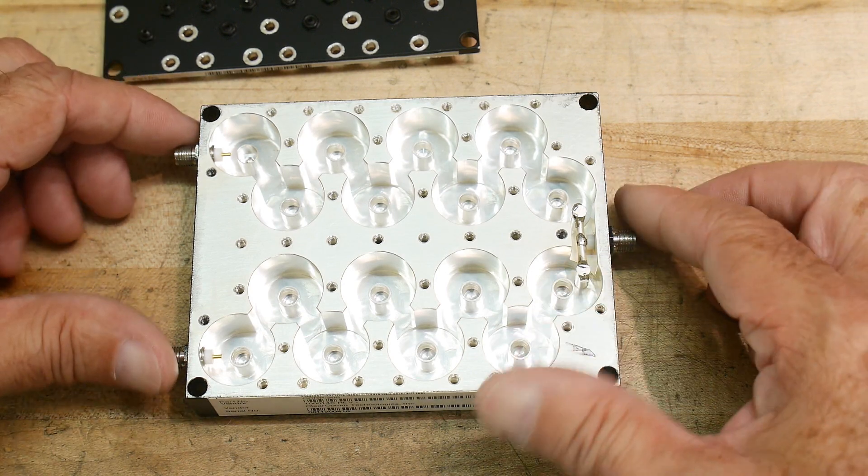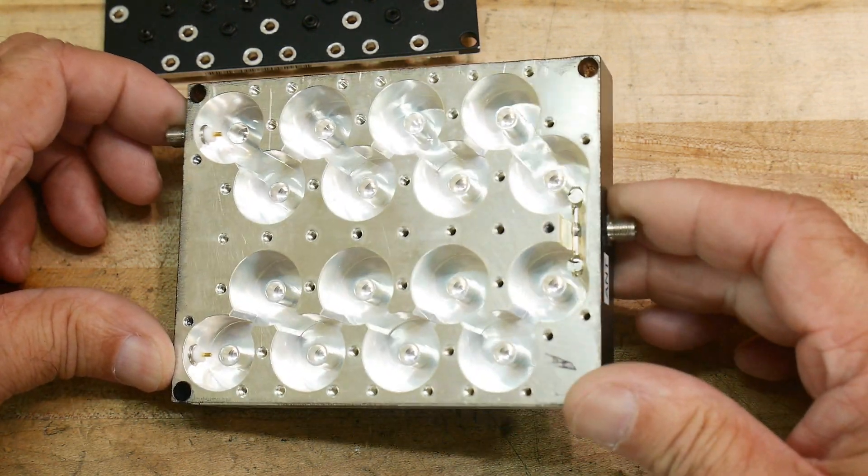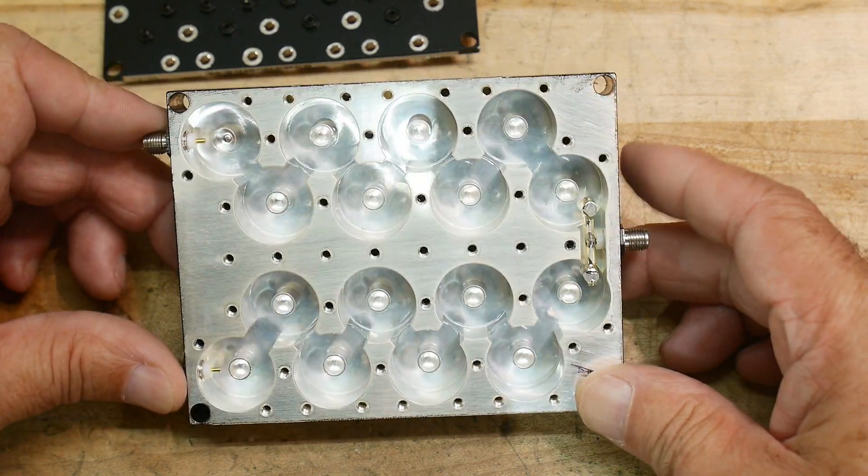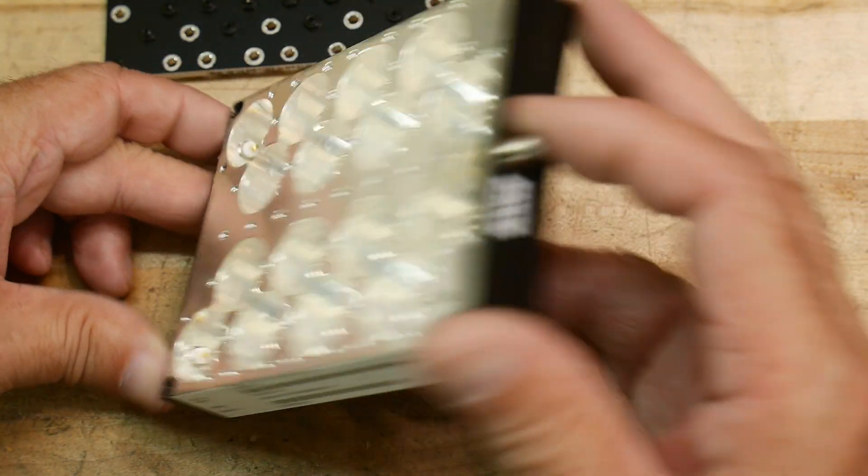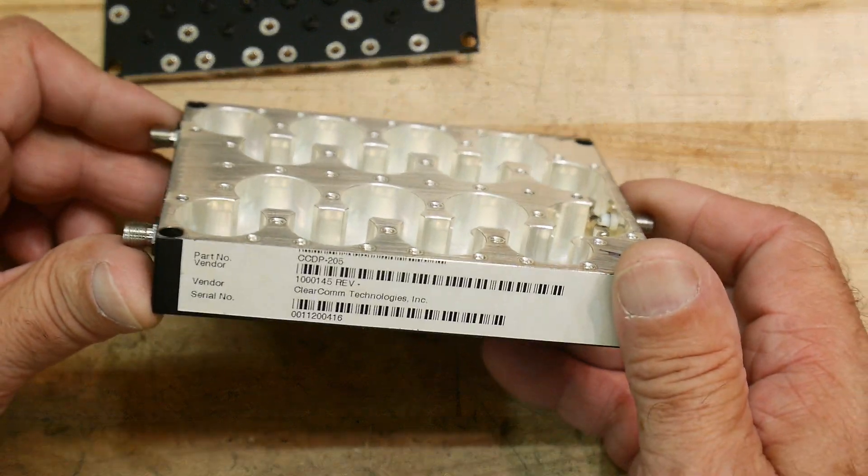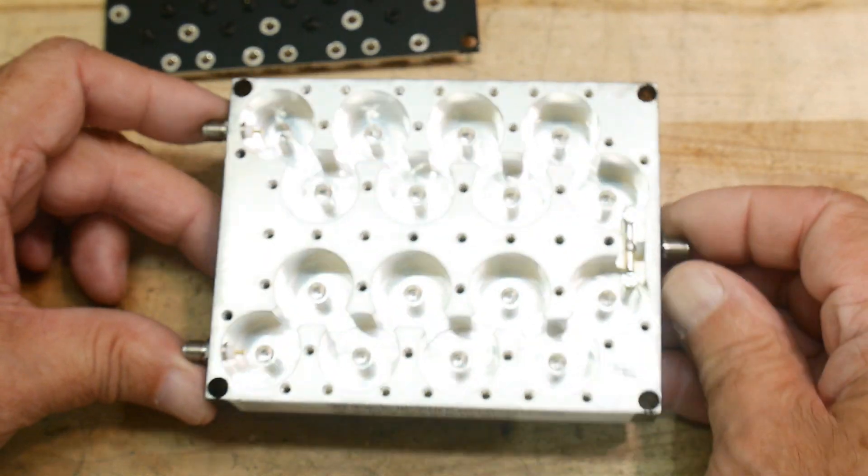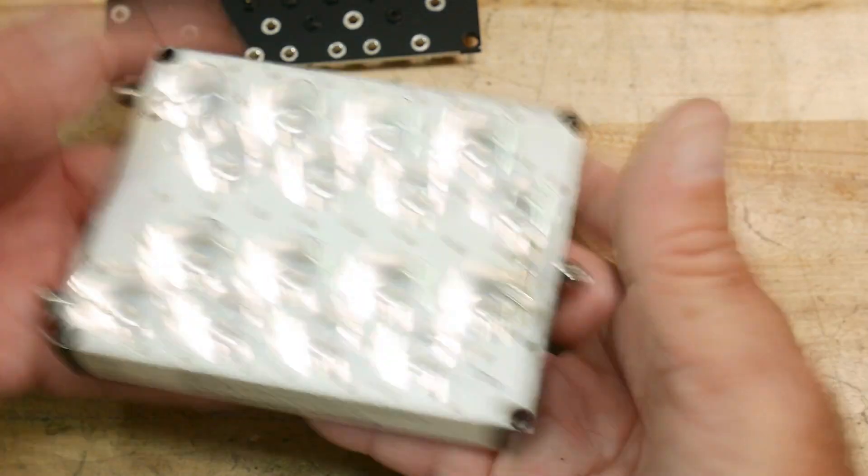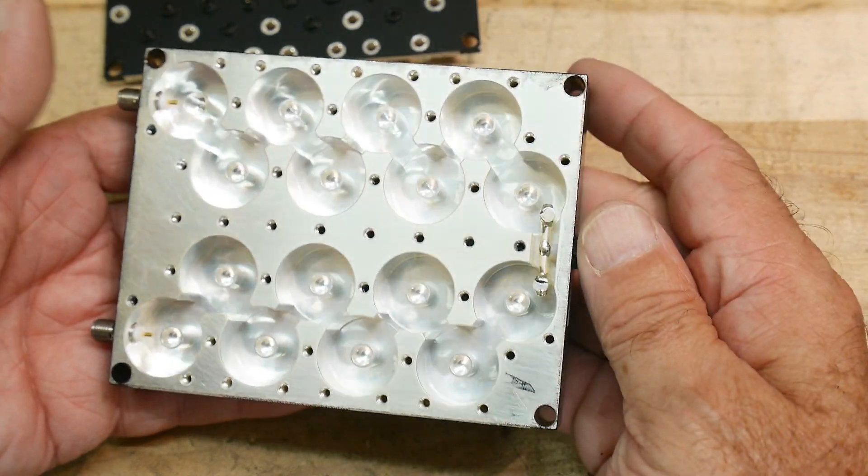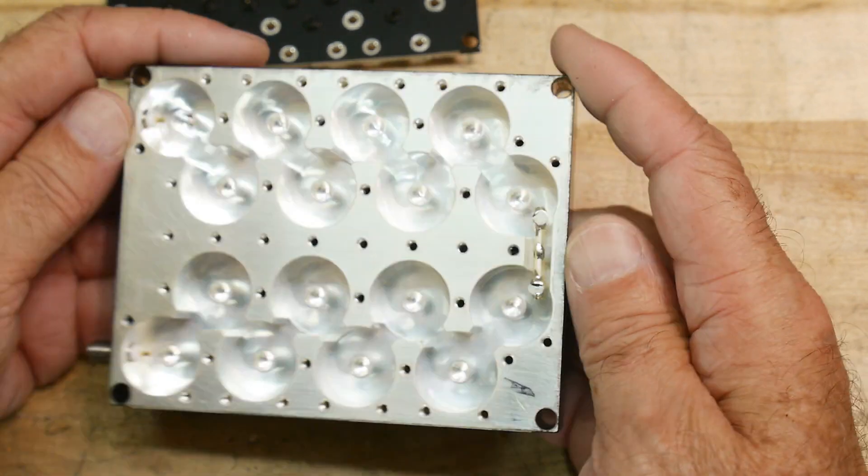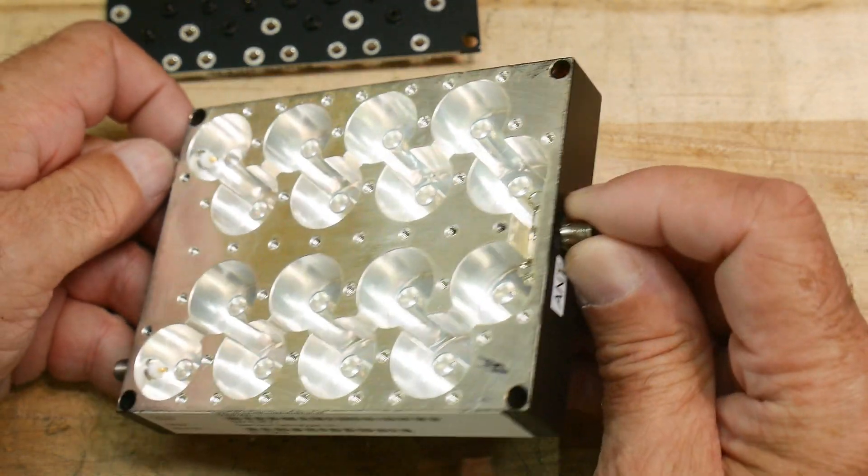This is what duplexers look like inside. They're just hollow milled out aluminum. I don't know if this one is silver plated. It looks like it might be. That would be my guess. It's probably all silver plated. It feels like aluminum. It doesn't feel like brass to me. So I'm not quite sure how you silver plate aluminum, but that's probably another story.